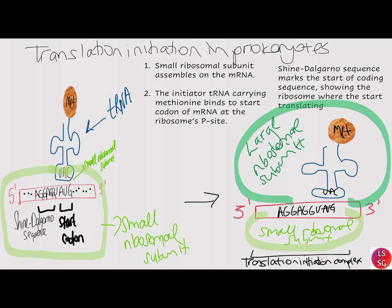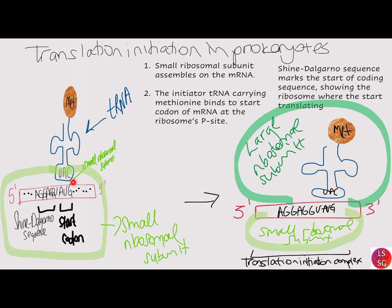In translation, the codons of messenger RNA are read from 5' to 3' direction by molecules called transfer RNAs. One end of the transfer RNA has a set of three nucleotides called anticodons that match with the messenger RNA codon through base pairing. The other end of the transfer RNA carries a specific amino acid specified by the codon.